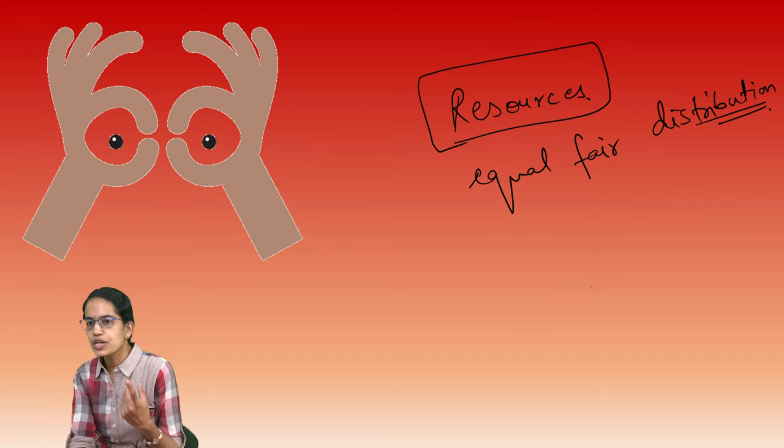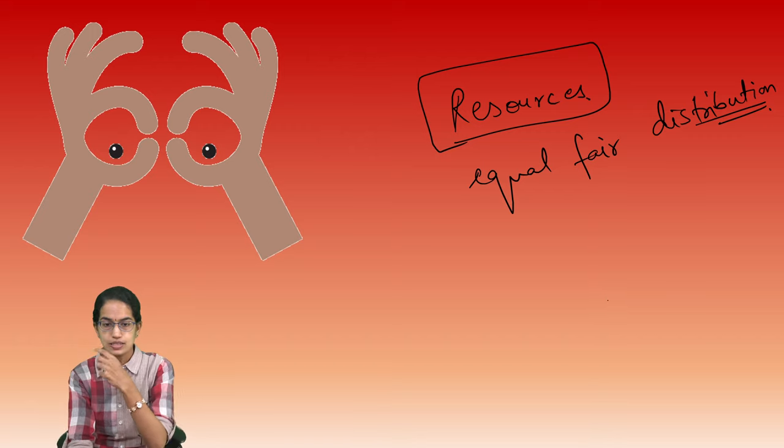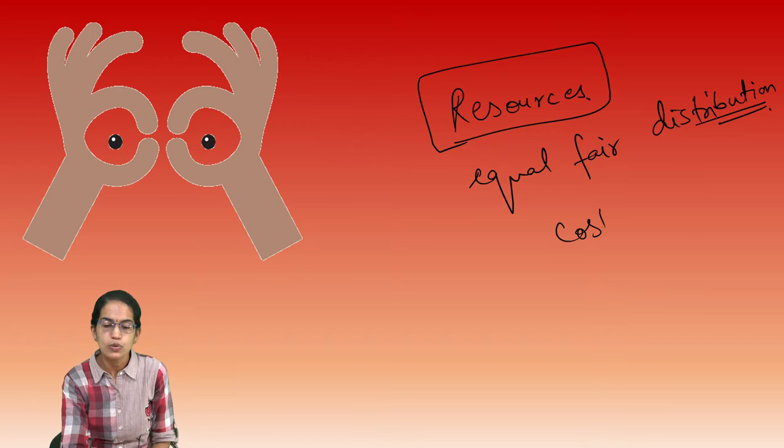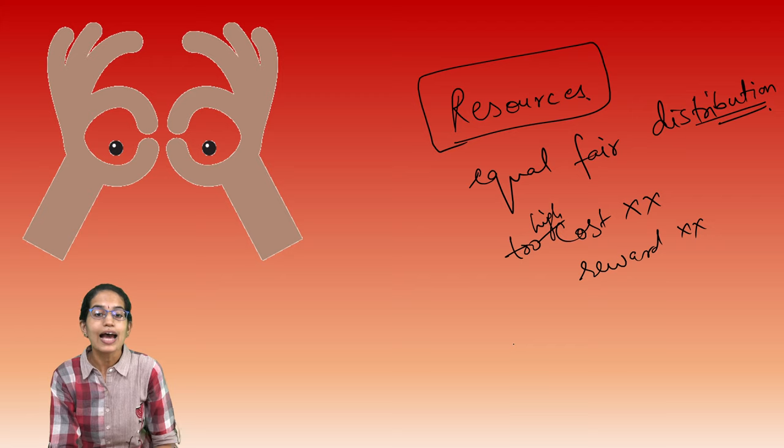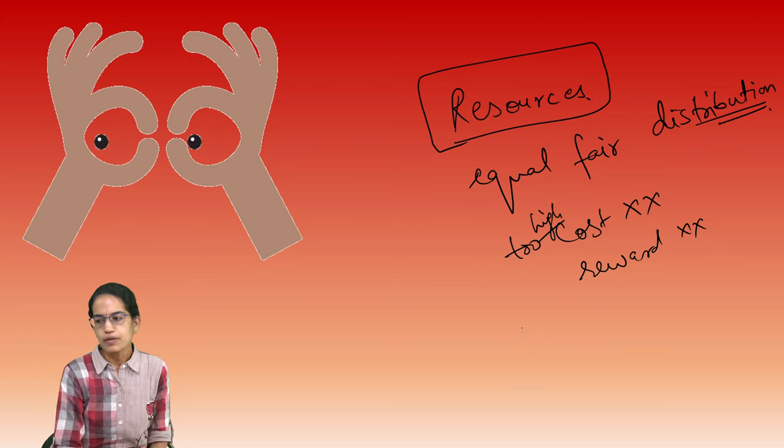However, we won't progress if the costs are too high, if the rewards are not met. If the rewards are not met or too high cost is there, in that case, there won't be a parity.